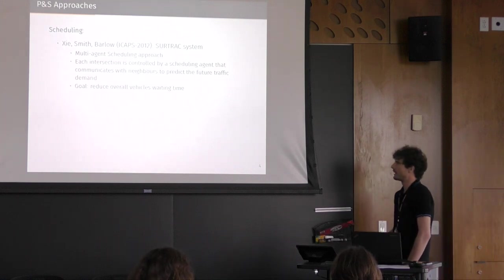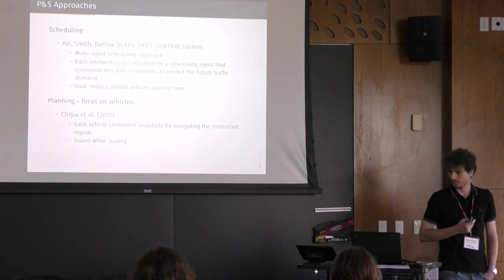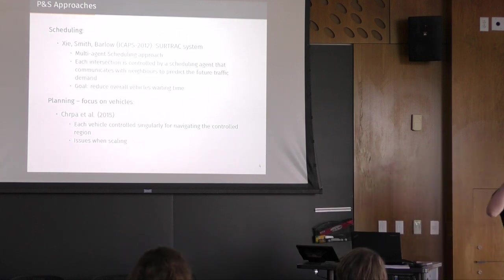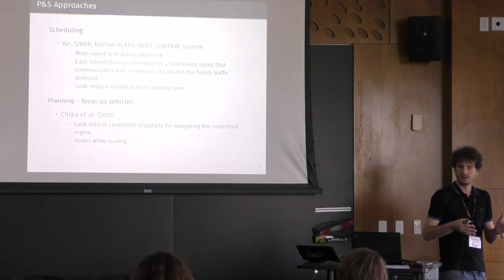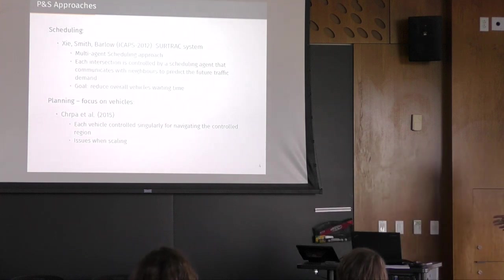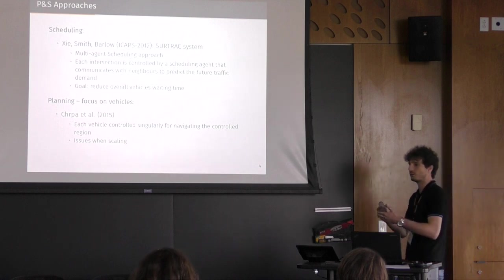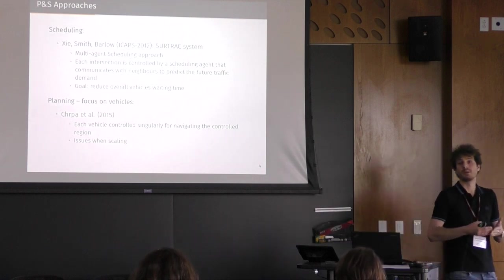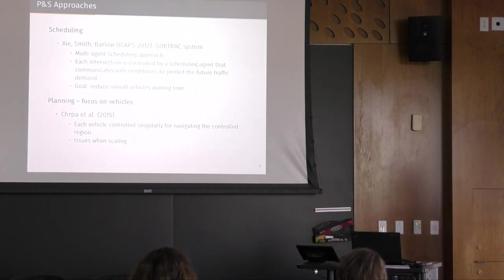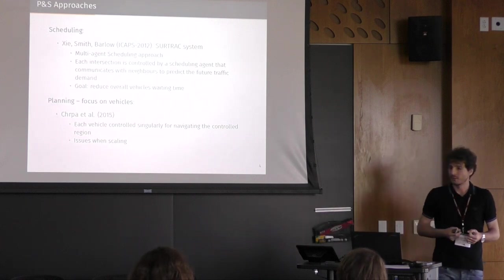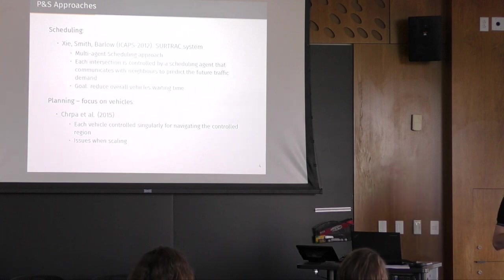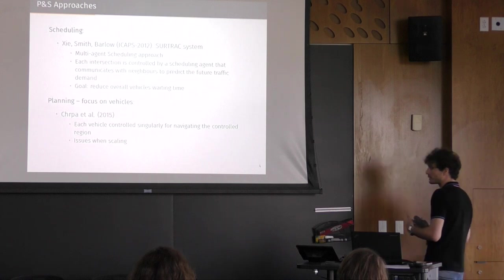And if we move in the area of planning, one work which was proposed by Lucas Harper, or led by Lucas Harper, which is down there, in 2015, has a strong focus on vehicles. So the idea was, let's model each vehicle singularly, and let's say that each vehicle which is entering into the region which is controlled, has a communication with the urban traffic control system, maybe through SatNav or through Google or through something like that, so we can tell this vehicle where to go in order to distribute the traffic. The idea works pretty well, but clearly, I think you can imagine that there are some scalability issues. So as soon as the number of vehicles grows, this approach cannot be applied anymore.